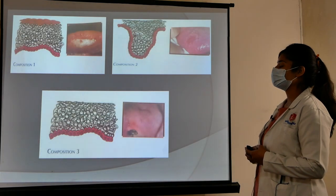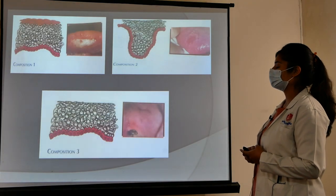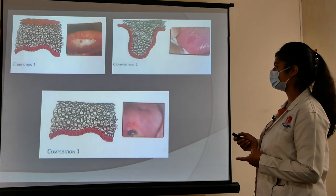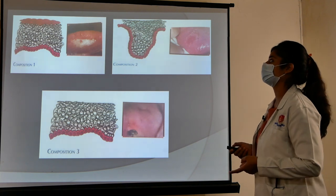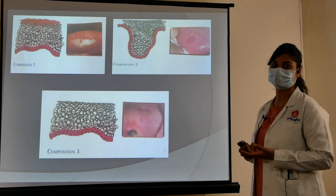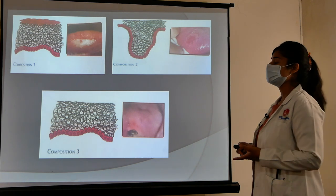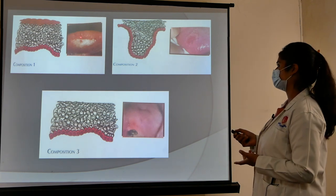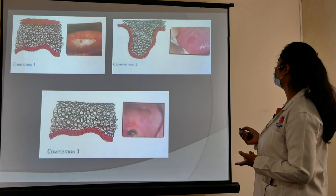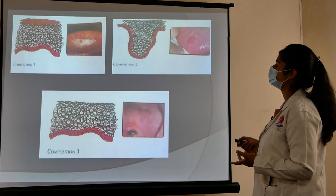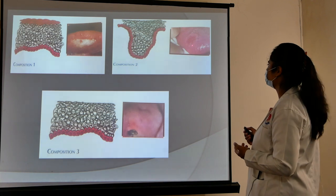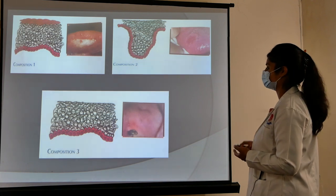These are the compositions of the white lesion of the oral mucosa. First, composition one is hyperkeratosis, in which there is an increase in the keratin layer, forming a hyperkeratotic patch. The second one is acanthosis, in which there is a decrease in the spinous layer, forming an acanthotic patch.